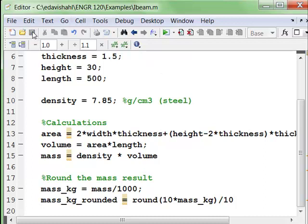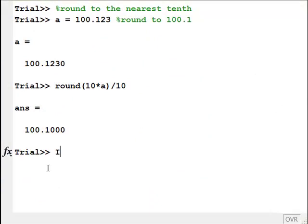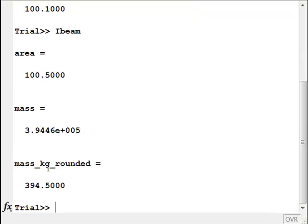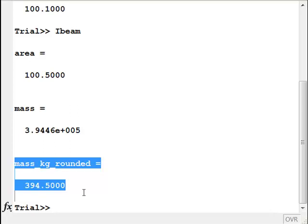So what I'm going to do now is save it. It's called ibeam.m. And then let's go ahead and run it over in the command window. So let's bring up the command window. And to run it, I'm just going to type ibeam at the command prompt. And when we type it, there we go. There's the area. There's the mass in grams. And here's the mass, kilograms, rounded. So one thing I'm seeing here is we don't really want to show this. We only want to report the rounded result where the mass in kilograms is rounded to 394.5.